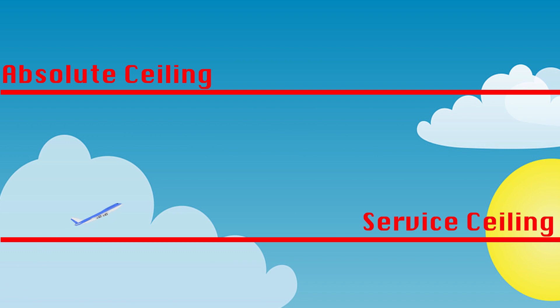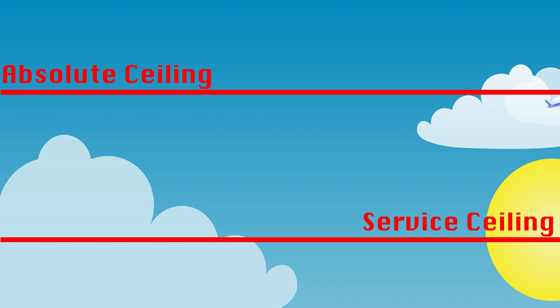If you fly above the service ceiling with this 100 feet per minute, you will reach a point at which you will not be able to climb anymore and your rate of climb will be zero. When your rate of climb is zero with maximum thrust, that's called the absolute ceiling. The difference between the service ceiling and the absolute ceiling is that at the service ceiling your aircraft will still give you 100 feet per minute, while at the absolute ceiling the aircraft cannot climb anymore.